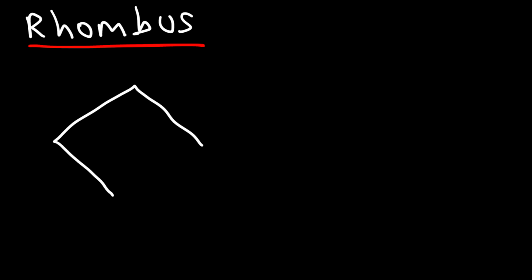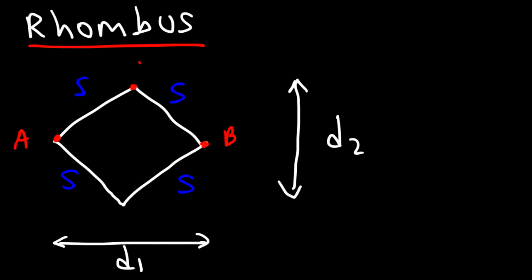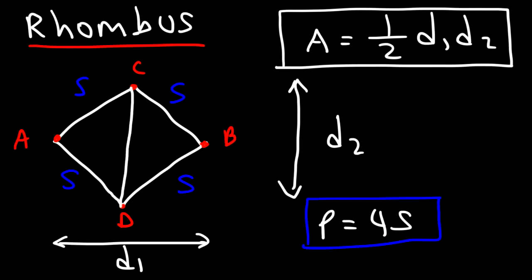The rhombus is similar to a square in that it has four equal sides of length S. Label the two diagonals D1 and D2. The area of a rhombus is one half D1 times D2, and the perimeter is four times the side length. The diagonals bisect each other at right angles, so if half of D1 is 3 and half of D2 is 4, we get a 3-4-5 right triangle, meaning each side is 5 units.